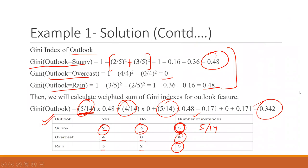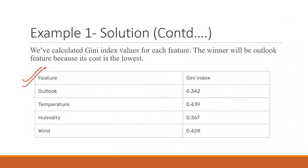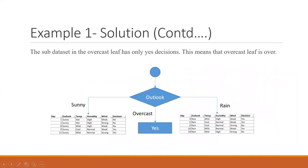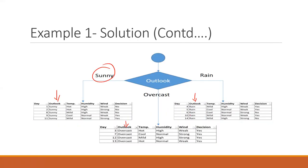The minimum Gini index is selected. Here the minimum value belongs to outlook, so outlook is the first attribute used for splitting. This produces three sub-tables: one for outlook = sunny, one for outlook = overcast, and one for outlook = rain. For overcast, all values are Yes, so we simply write Yes at that node.